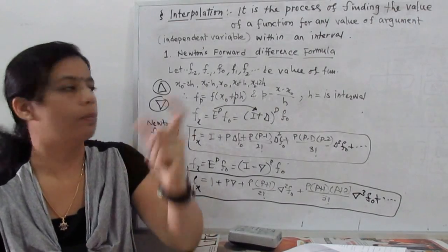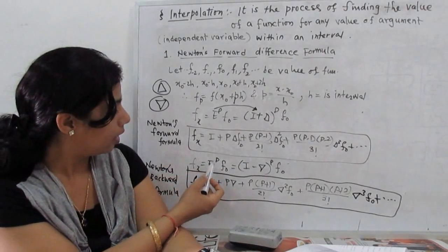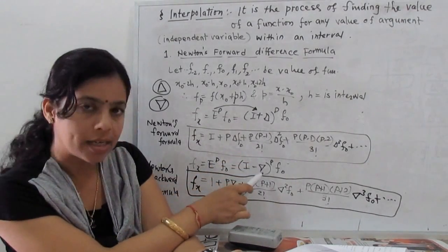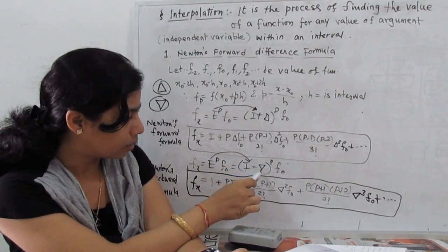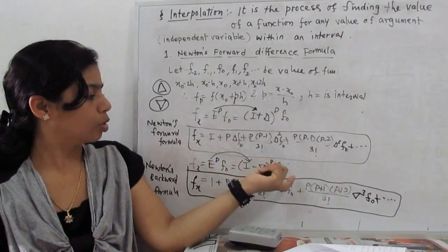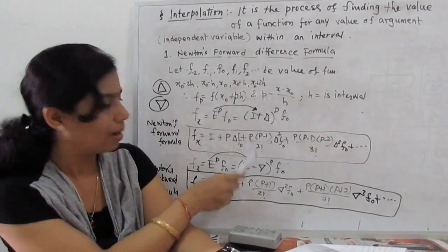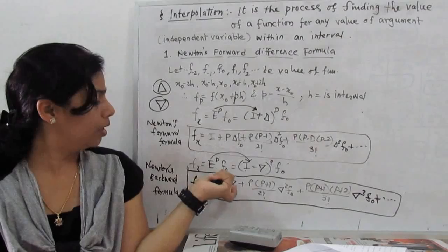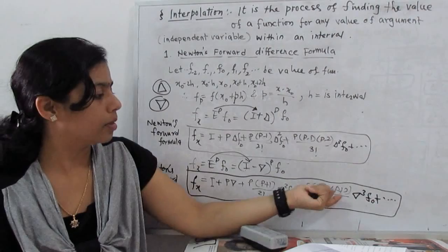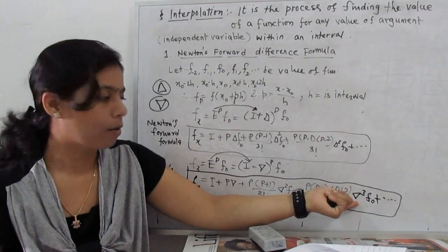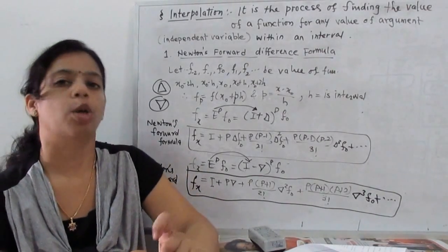We can find the other formula using Newton's backward operator. The relation is: eᵖ · f(p) = (1 − ∇)^(−p) · f(0), where e = (1 − ∇)^(−p). Opening this expansion with the minus sign, it becomes: f(0) + p·∇f(0) + p(p+1)/2! · ∇²f(0) + p(p+1)(p+2)/3! · ∇³f(0) + ... and so on. This is called Newton's backward difference formula.